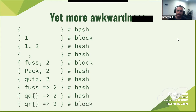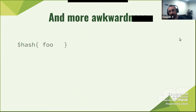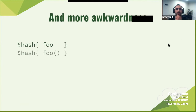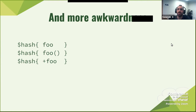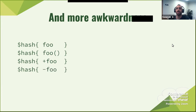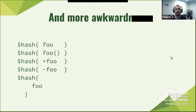More awkwardness: '%hash{foo}' will work, and '%hash{foo}' with parentheses will also work. Some people know this, some don't. What happens if you do '+foo'? Abigail would know all the answers. '+foo' actually calls the function foo. But '-foo', which you'd think would be similar, is not — minus foo is actually going to be a string '-foo'.